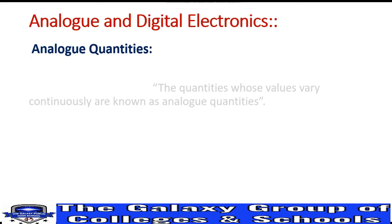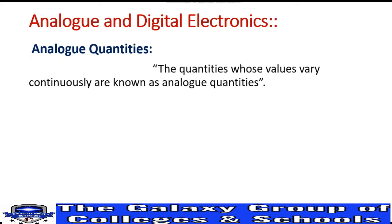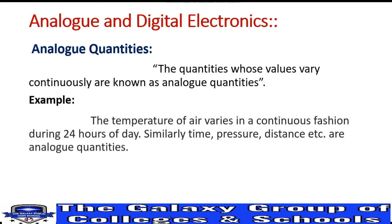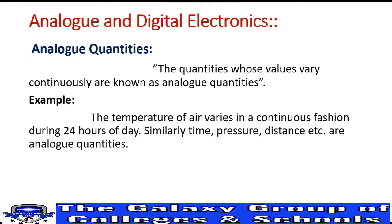The first definition: what are Analog Quantities? Analog quantities are those whose values vary continuously. For example, the temperature of the air varies in a continuous fashion during 24 hours of a day. The temperature changes continuously. We call these Analog Quantities. Other examples include time, pressure, and distance — these are all analog quantities whose values change continuously.